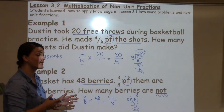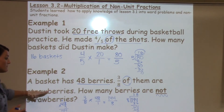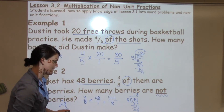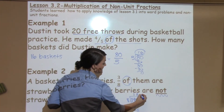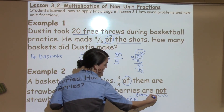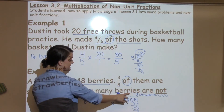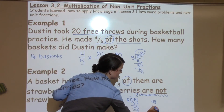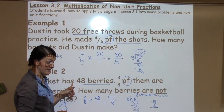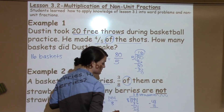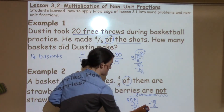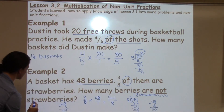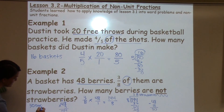Now, lots of times students will stop here and record their answer as 18 strawberries. But remember, that is not the question they're asking. They're asking how many berries are not strawberries. So if I have 18 that are strawberries, I need to compare 18 and 48 to see how much is left over. I have 48 total berries, 18 of them are strawberries. So if I subtract those two amounts: 8 minus 8 is 0, 4 minus 1 is 3. So there are 30 berries that are not strawberries.